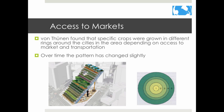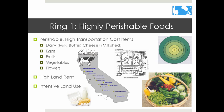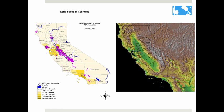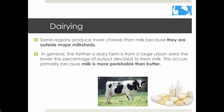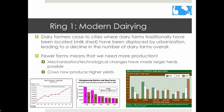In ring one, farmers should grow perishable, high transportation cost items — things like dairy, eggs, fruits, vegetables, and flowers. In this ring, land rent is high and intensive farming is the only way to turn a profit. This is why the area near cities is often called a 'milkshed,' where dairy farms surround cities. Von Thünen's model shows up in dairy farms being closer to major cities. Some regions produce more cheese than milk because they are outside major milksheds — milk is more perishable than butter, so butter is more likely to be made further from cities.